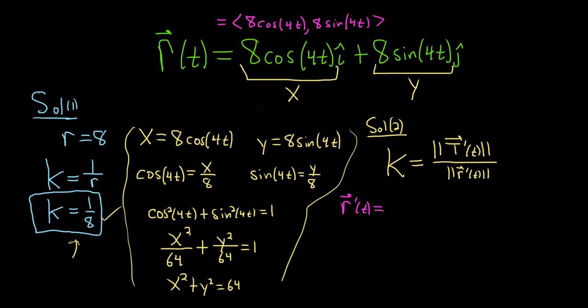So the derivative of cosine is negative sine. So we're going to get a negative sine here. But we're also going to get a 4 from the chain rule. So it's going to be negative 32 sine of 4t. And over here, it will be cosine of 4t times 4. So 4 times 8 is 32. So it will be 32 cosine 4t. Again, the 4 comes from the derivative of the inside. It gets multiplied by the 8 and gives you 32.